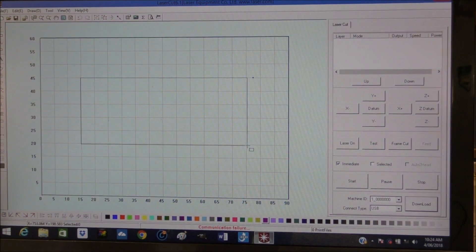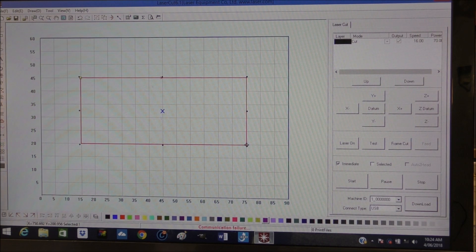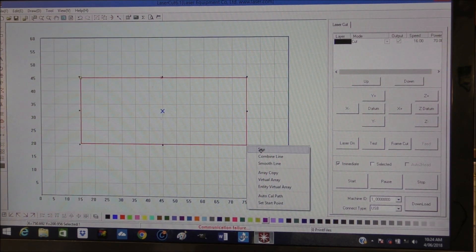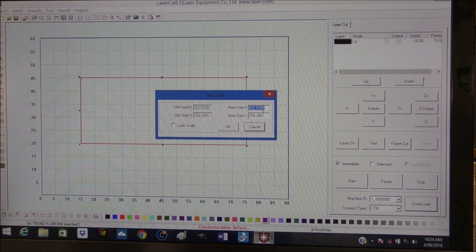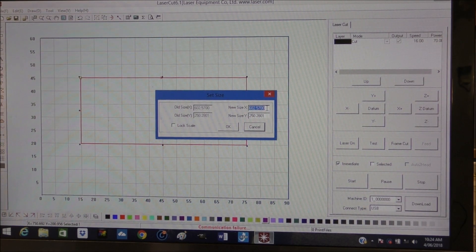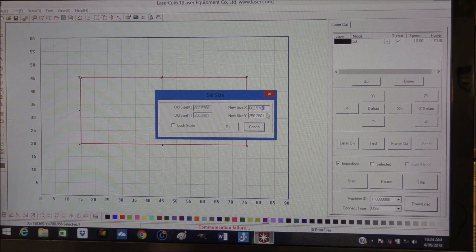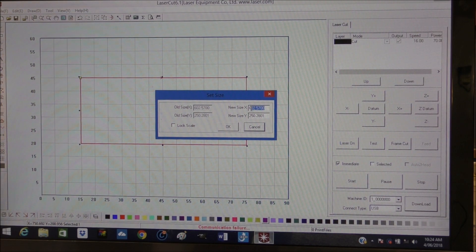To do this, we just draw a square and then highlight it, bring up a dialog box, and resize it to the exact size that we require to cut it for our door.